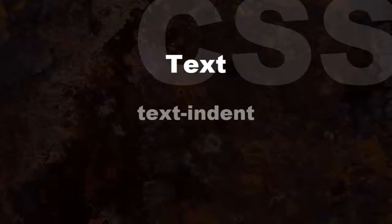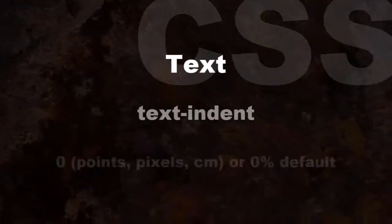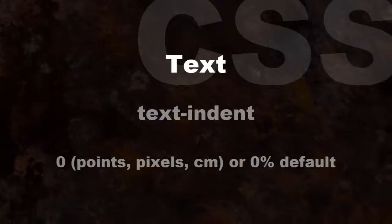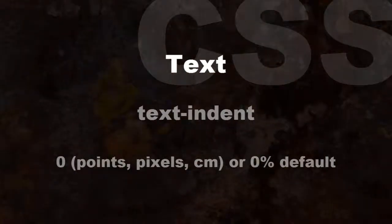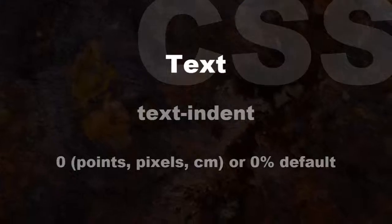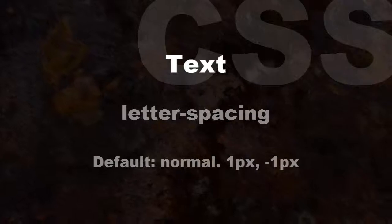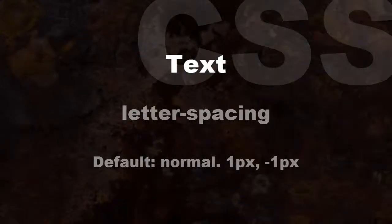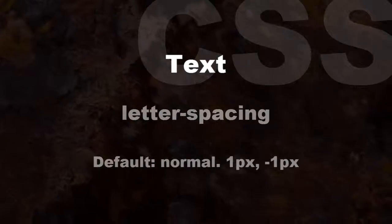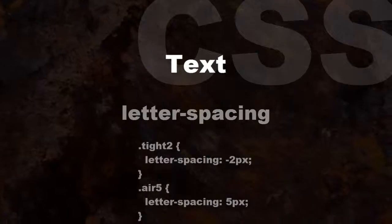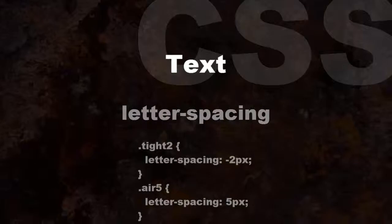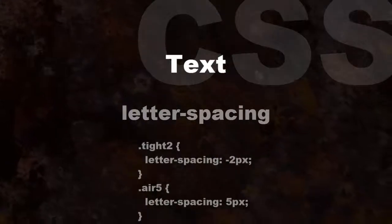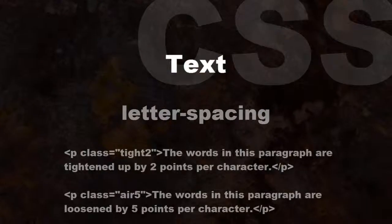Text-indent controls the first line starting position of a block of text. Values can be a specific numeric length in various units, with a default of zero. Values can also be expressed as a percentage of the parent element's width. Letter-spacing controls the space between characters. Normal is the default and adds no extra space. Negative values are also possible to tighten spacing. Examples: .tight2 { letter-spacing: -2px; } and .air5 { letter-spacing: 5px; }.